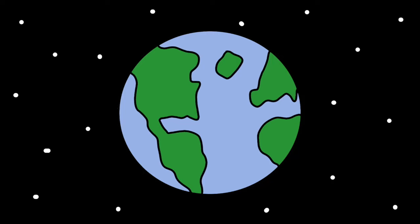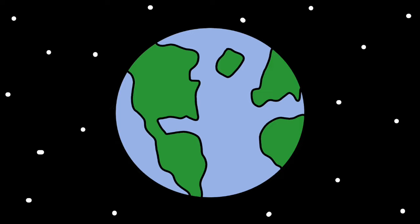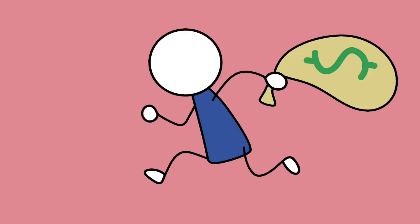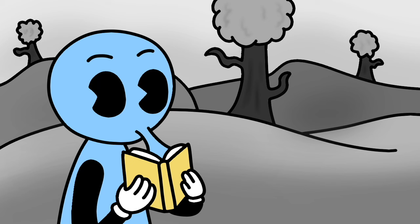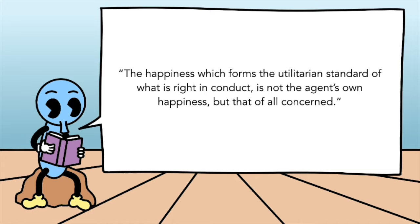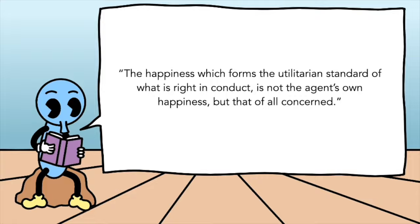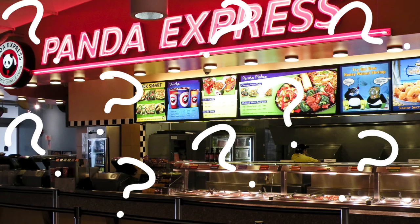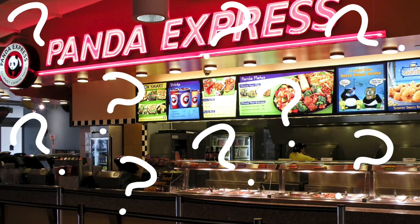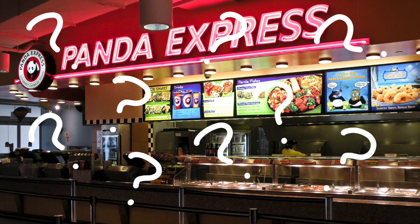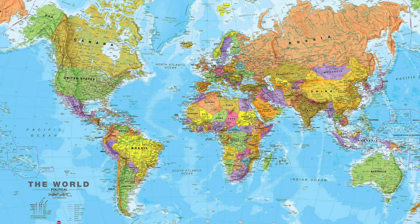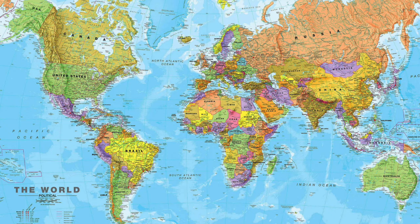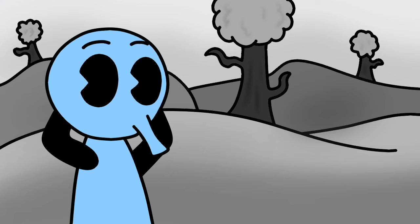Now the next important thing Mill wants us to know about utilitarianism is that when we attempt a good action, we don't just consider our pleasure, we consider the overall pleasure in the world. Because if utilitarianism was just concerned about our own pleasure, it may be the most selfish and cruel philosophy out there. Instead, we need to consider the effect of our action on overall pleasure in the world. The happiness which forms the utilitarian standard of what is right in conduct is not the agent's own happiness, but that of all concerned. Now you may think, so every action I do should be judged based on its effect on the entire world — so if I go to Panda Express and get some honey walnut shrimp, I should consider a random businessman in Sydney, Australia? Thankfully no, and it'd kind of be impossible for any system of ethics to really make you consider the effect of your actions on the entire world, because the world is so big and complicated and mostly unknown.